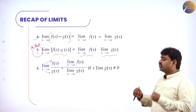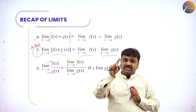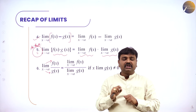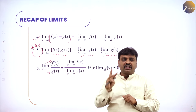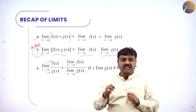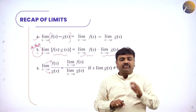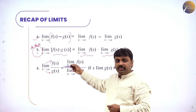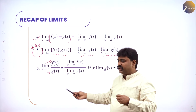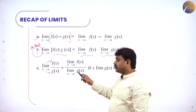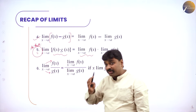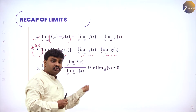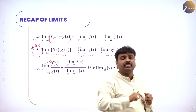So six properties in total: first, limit of constant is constant; second, limit of constant times function — take constant outside and apply limit for the function; third and fourth, sum and difference of two functions — apply limit for each function; fifth, product of two functions — apply limit for each function; sixth, rational functions — apply limits separately for numerator and denominator. Remember these properties; we will apply them to solve problems. These are the things you studied in 11th standard, and you should be very strong with these basics to understand limits and continuity.